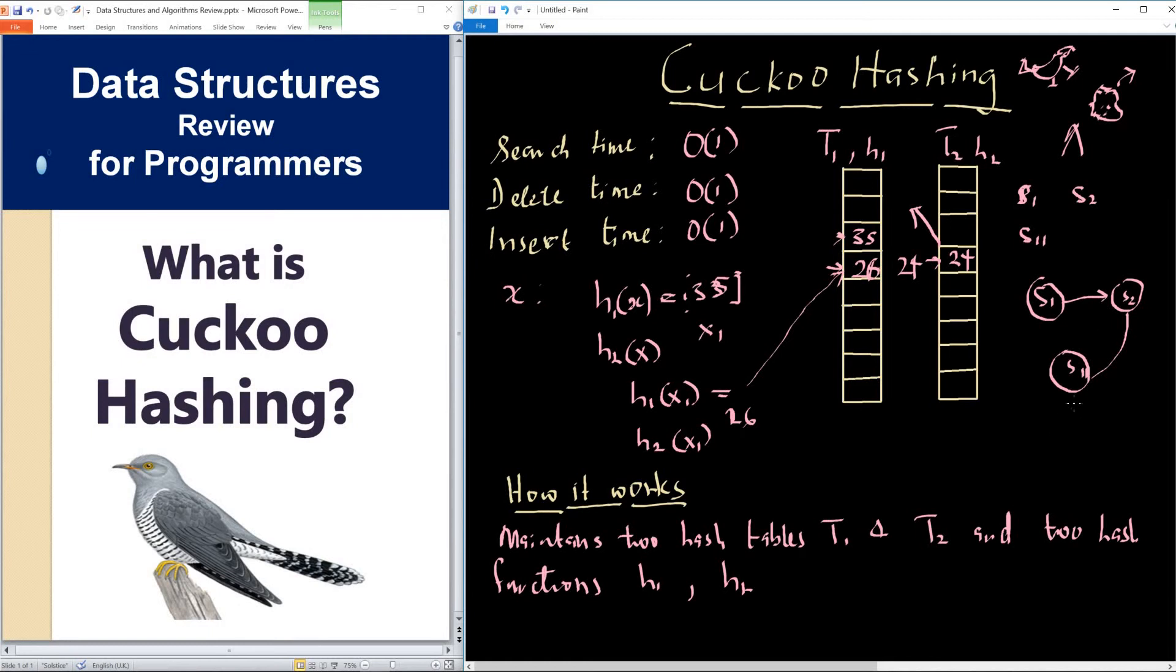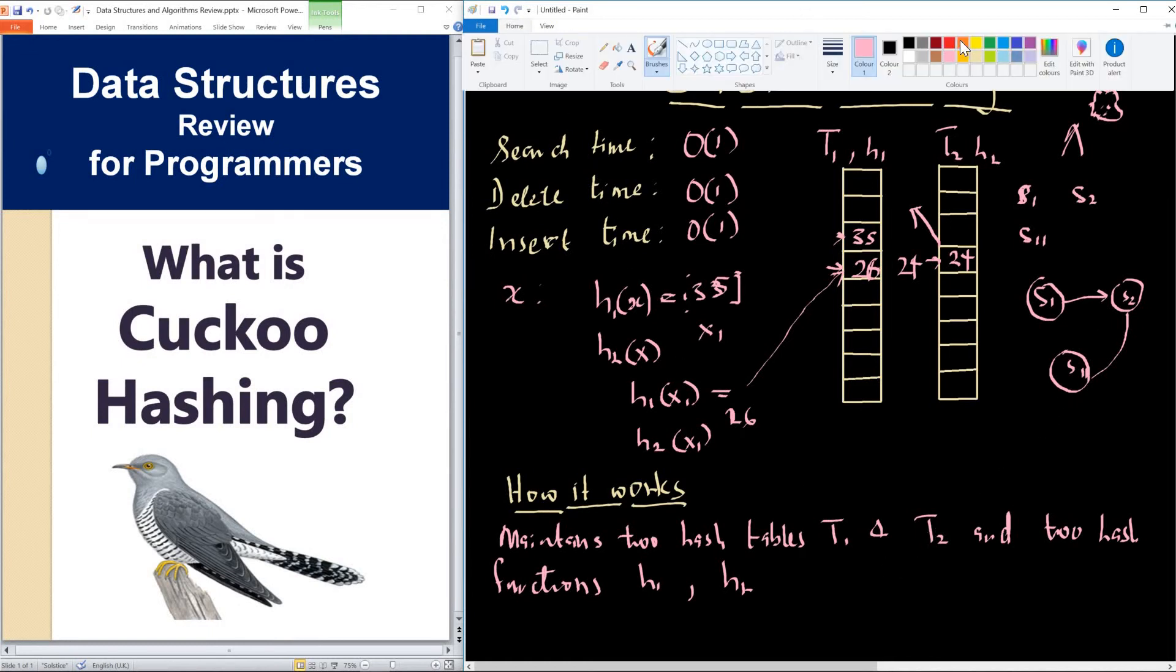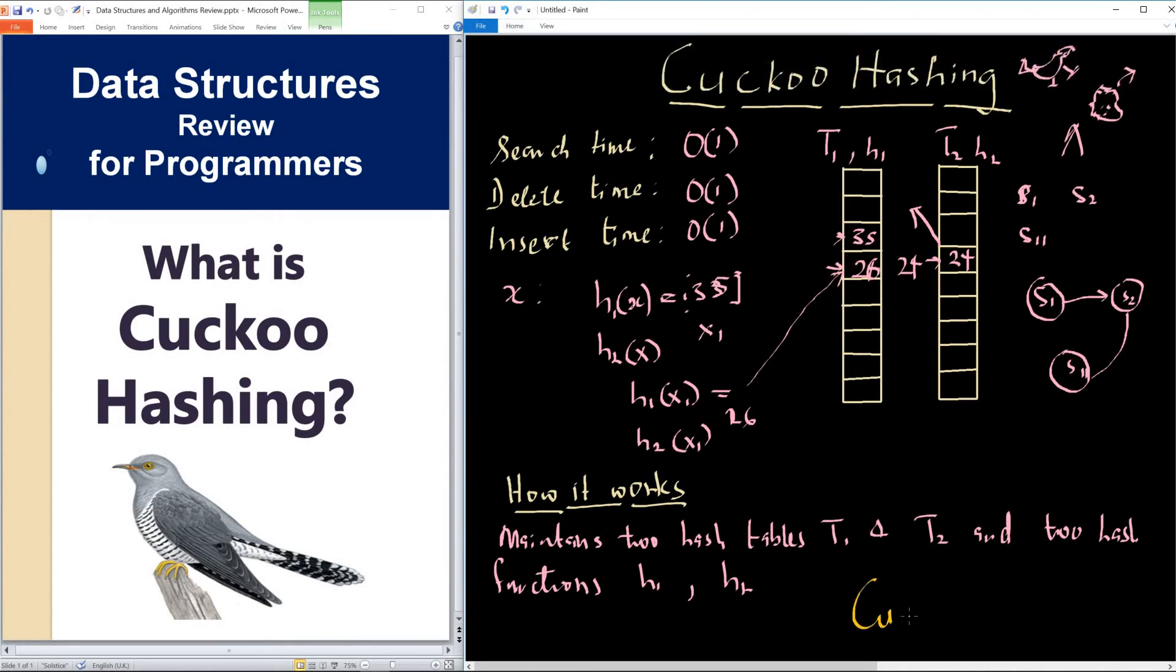Something like this is called a cuckoo graph. When we have a cuckoo graph, we can monitor it, and if there is a cycle in the cuckoo graph, then we rehash. What it means is that we choose another H1 and H2. Remember that H1 and H2 come from a universal hash family of hash functions.